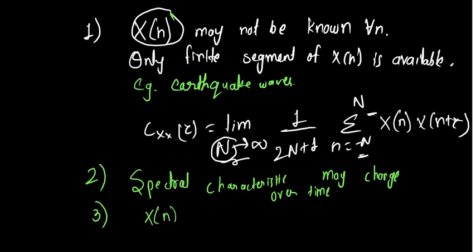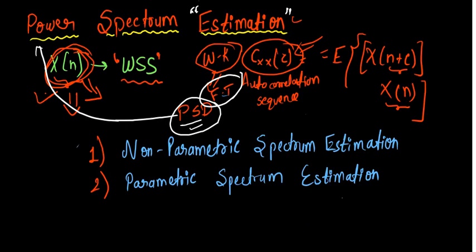The third and the last is that sometimes X(n) is often corrupted with noise. Therefore, in practicality or in real situations we can't exactly estimate our power spectrum, and that's why we call it estimation. We can't get the true value but we get some estimation.